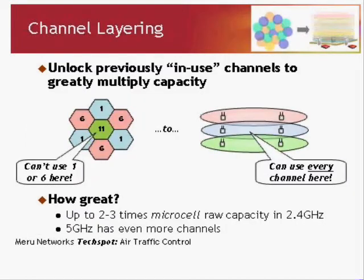Let's move on to this concept of channel layering. Channel layering is the next cornerstone — it basically unlocks channels that were previously in use and allows you to greatly multiply the capacity. Looking at the hexagonal diagram on the left, that's what Microcell does. If you have channel 11 in the middle, none of the neighbors can be channel 11; they have to be channels 1 or 6, alternating to prevent any two access points from sharing the same channel. That means for a channel 11 access point, you can only put that one access point there.